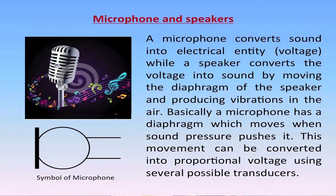Basically, a microphone has a diaphragm which moves when sound pressure pushes it. This movement can be converted into a proportional voltage using several possible transducers. A transducer is a device which receives electrical, mechanical or acoustic waves from one medium and converts them into related waves for a similar or different medium. Microphones can be of several types such as electrostatic, piezoelectric, contact resistance and magnetic type.